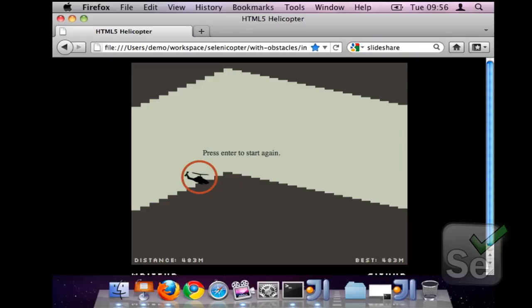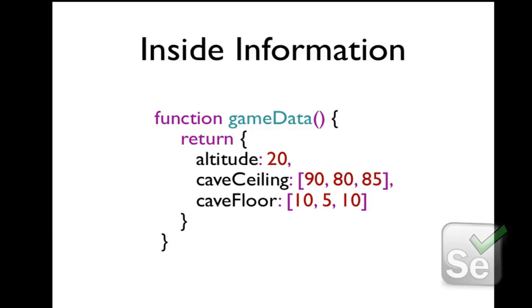483 meters — not bad. So how do you create tests for an application such as Helicopter? The first thing I needed to do as the tester was to establish what parameters I needed to know from the application. I played the game and worked out that what I'd need to know, at least to start off with, is the current altitude of the helicopter and details of the cave terrain, such as the cave ceiling and the cave floor. I then provided these to Andy, the web developer, to continue.